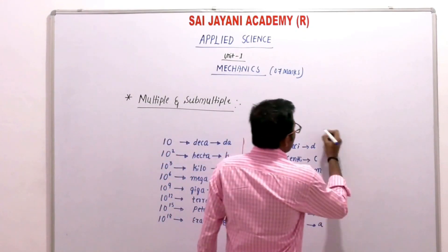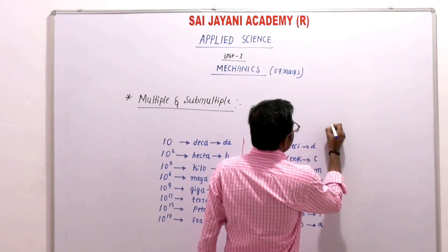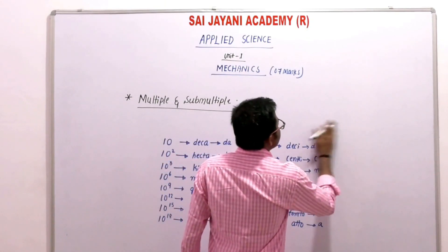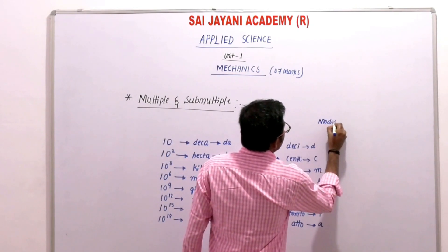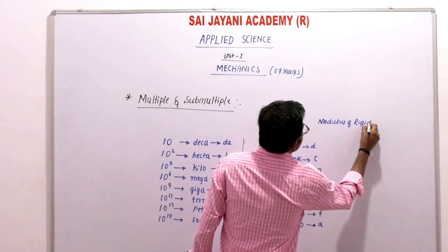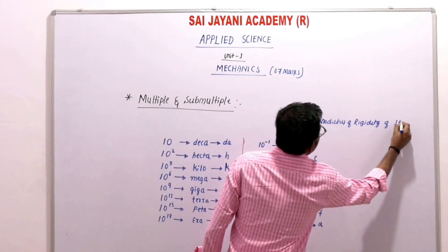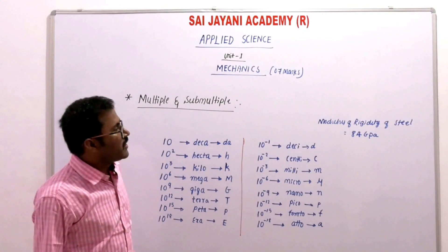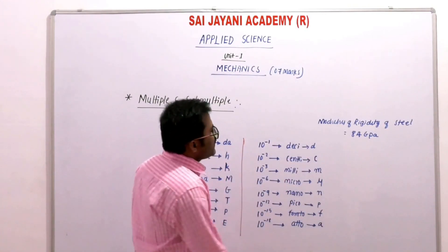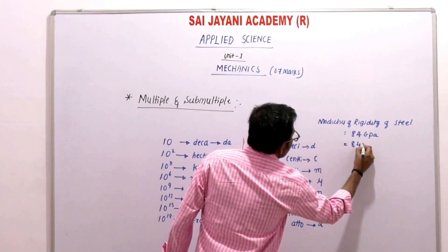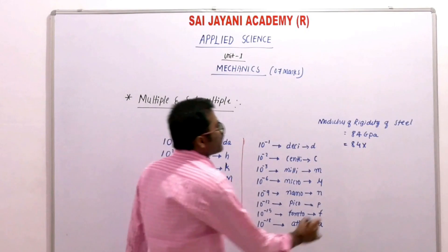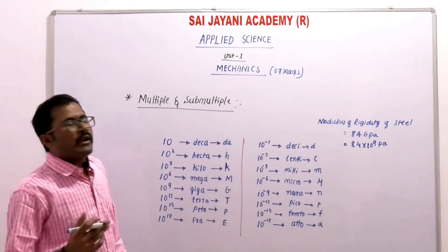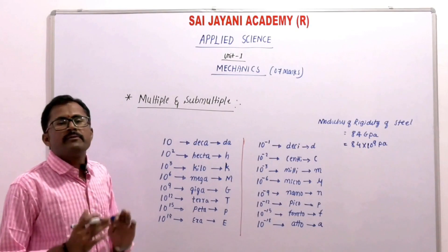As an example of where we use these: the modulus of rigidity of steel is 84 GPa. Here 'G' stands for giga, so that is 84 into 10 to the power 9 pascals. This is how we use multiples and submultiples for very large values.